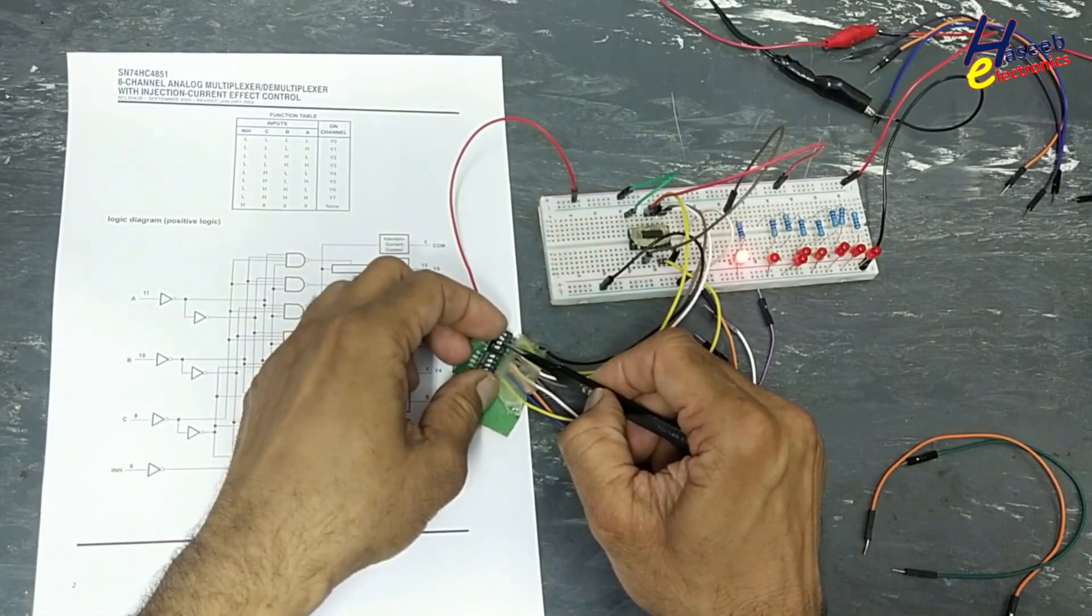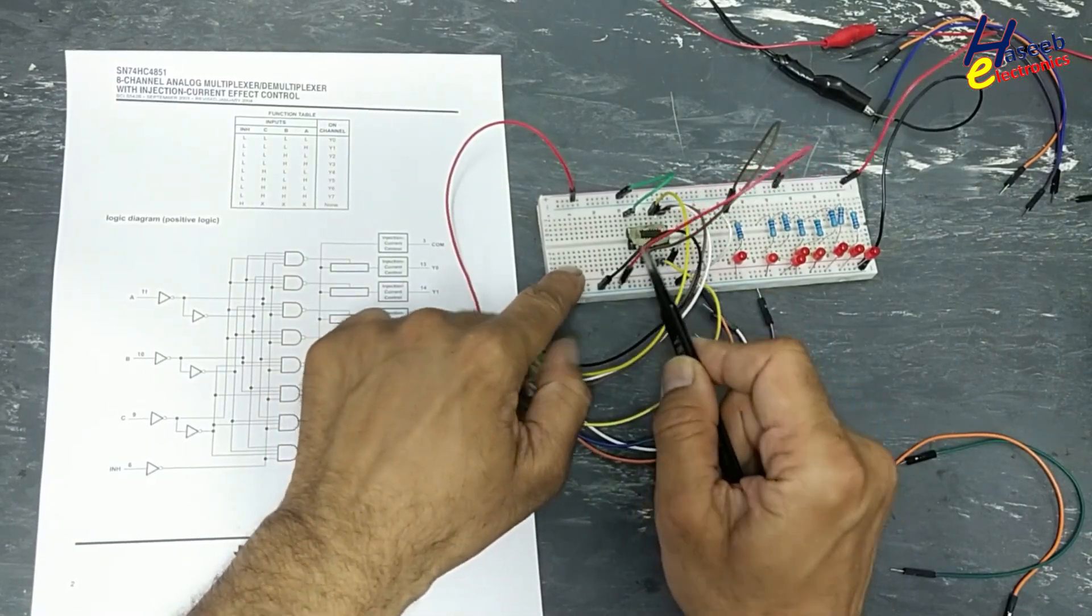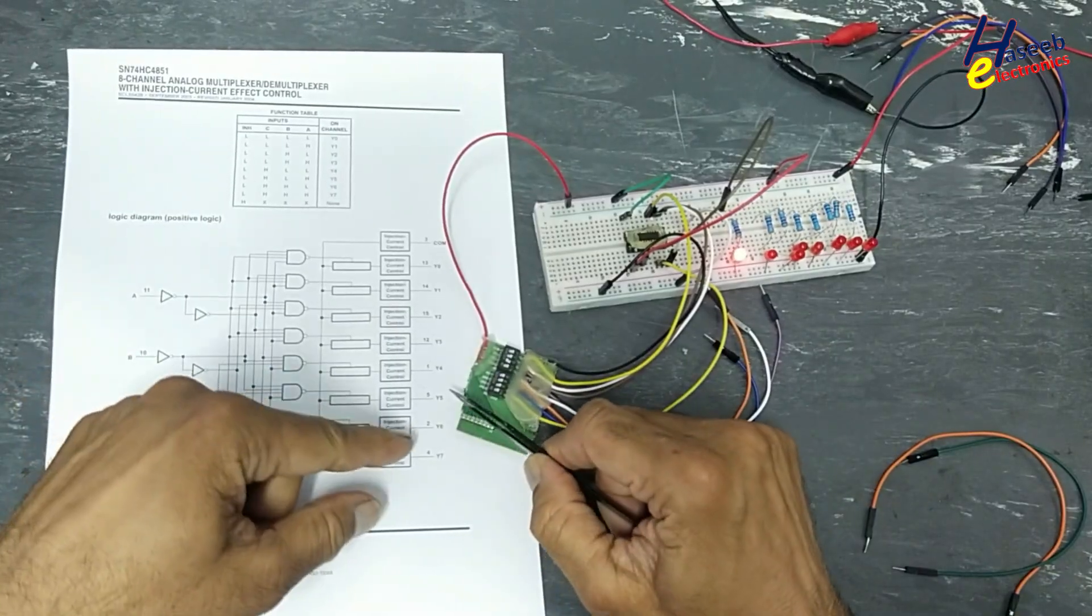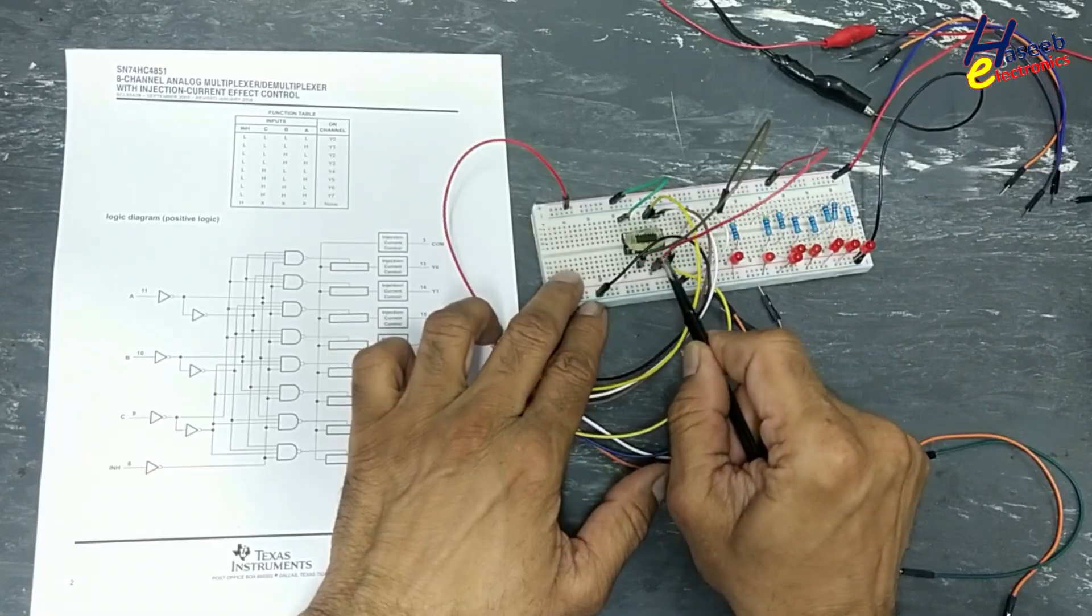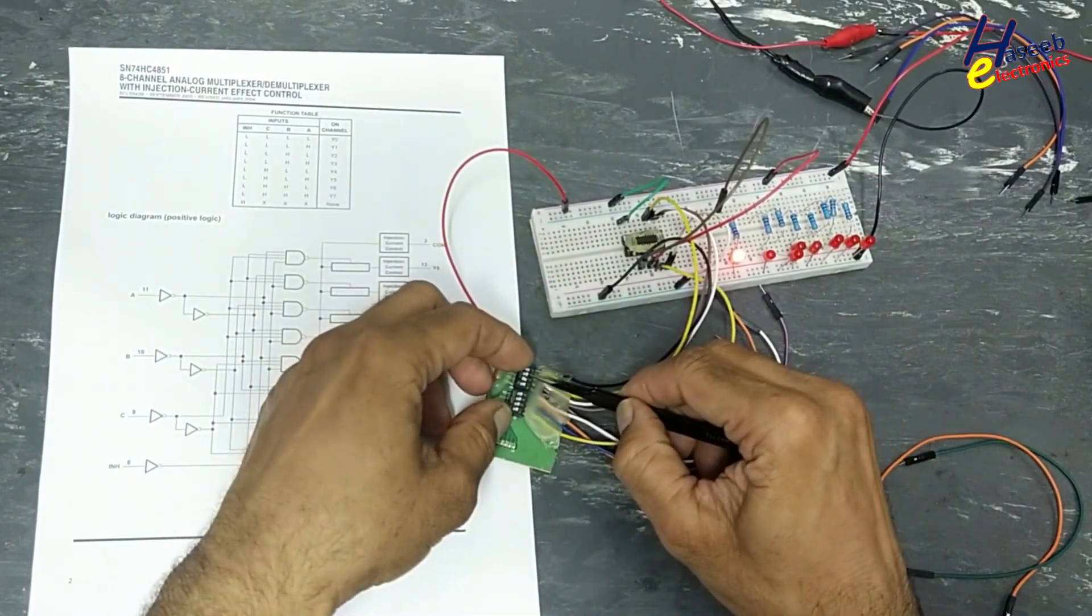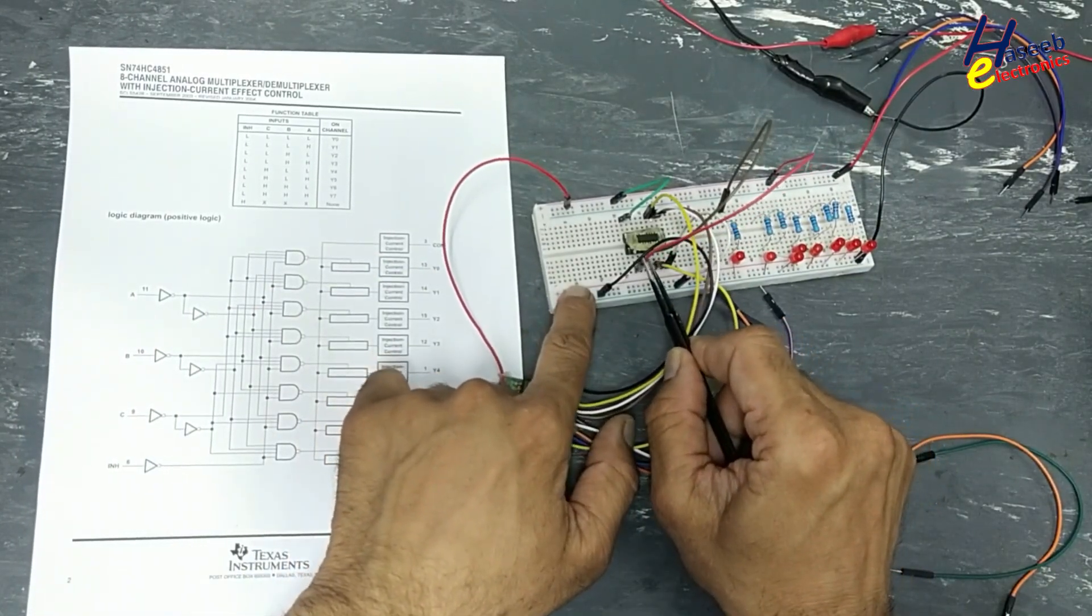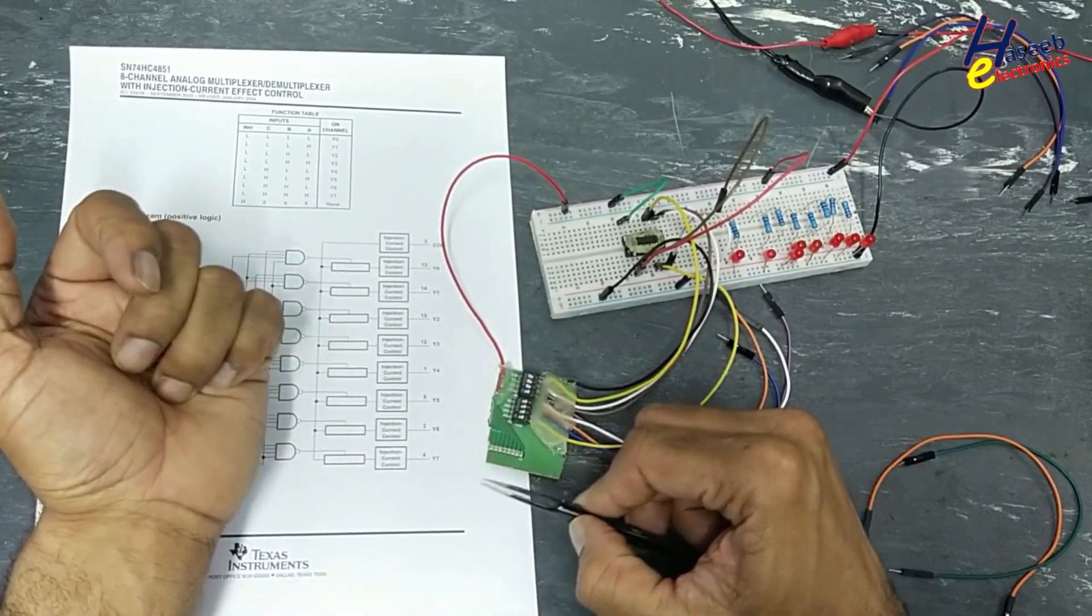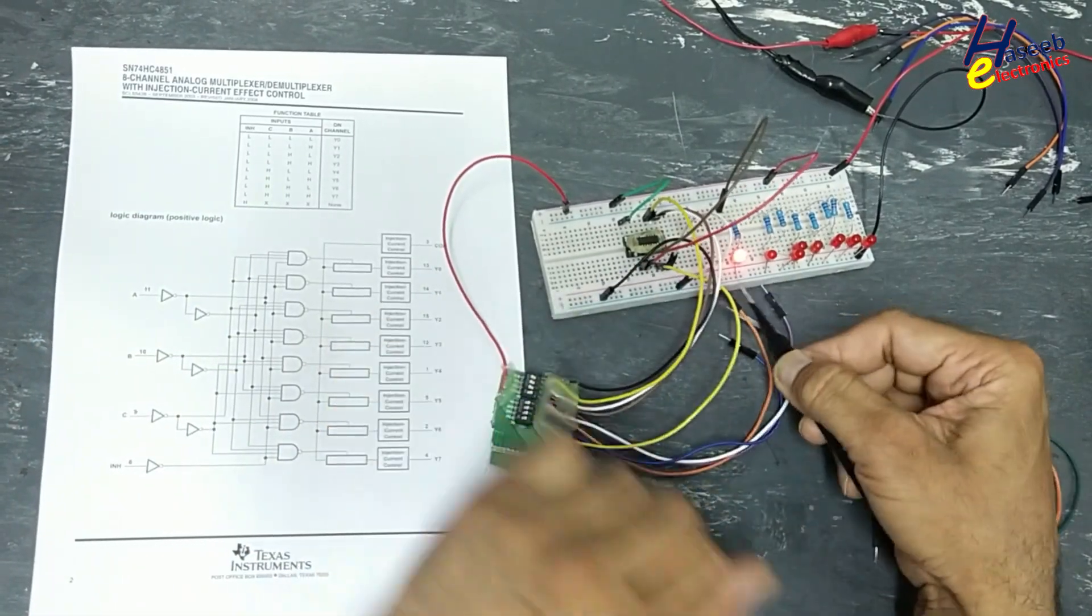One zero zero. Then Y4. One zero zero. Now pin number 1 will be connected to pin number 3. Yes, pin number 1. Then one zero one. Pin number 5 will be connected at output. One one zero, that is 6. Pin number 2 will be connected at output. One one one, that is pin number 4. Now signal at pin number 4 is reaching at output.